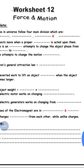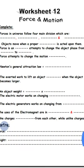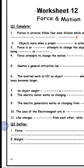Number six: the exerted work to lift an object. As the mass of the object increases, the weight of the object increases. So the exerted work to lift an object increases when the object's mass becomes larger.